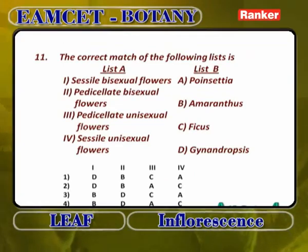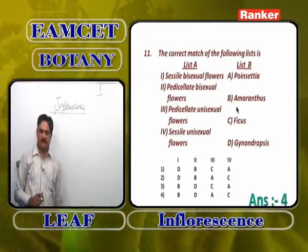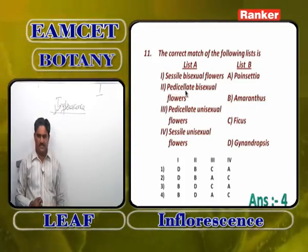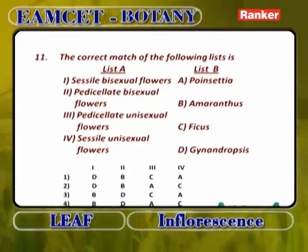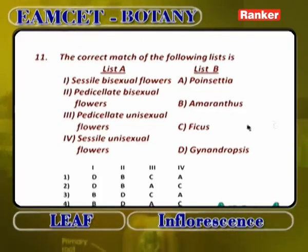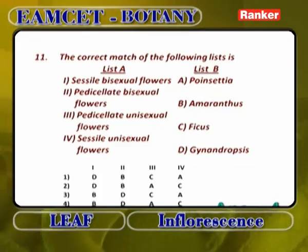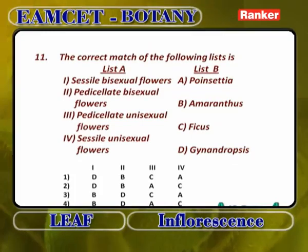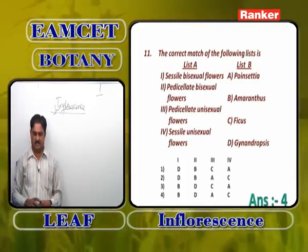Matching tabular form — correct match: 1 is B — sessile bisexual flowers, Amaranthus, simple spike. 2 is D — pedicellate bisexual flowers, Gynandropsis, simple corymb. 3 is A — pedicellate unisexual flowers, Poinsettia, cyathium — pedicellate where the pedicel shows a joint. Sessile unisexual flowers (C) — Ficus — hypanthodium. Summary: Amaranthus = simple spike; Gynandropsis = simple corymb; Poinsettia = cyathium; Ficus = hypanthodium. Answer: 4.